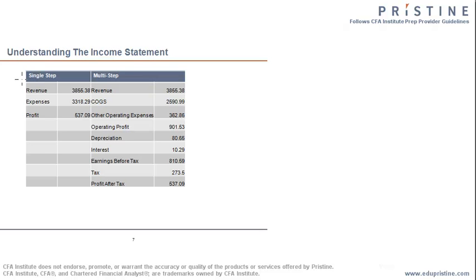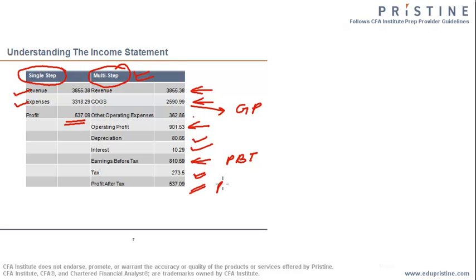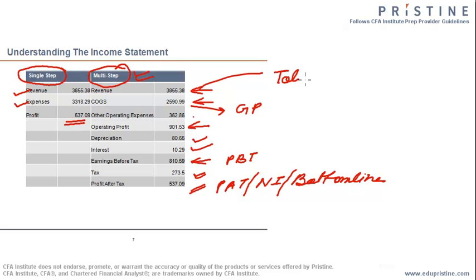In the single-step model, all revenue items are clubbed and expenses reduced to arrive at a profit figure. The multi-step model breaks revenue separately and divides expenditure into various heads: revenue minus COGS gives gross profit; reducing other operating expenses such as depreciation and interest gives earnings before tax, also known as profit before tax; and after reducing tax we get profit after tax — net income — also called the bottom line of the company. Sales is known as the top line.